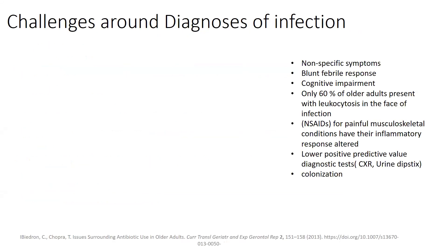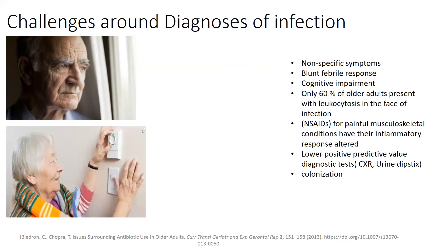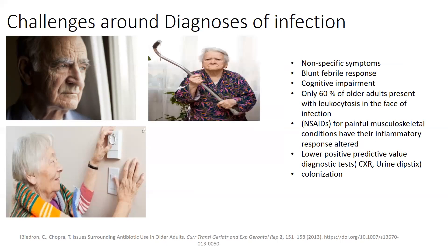There are also challenges around the diagnosis of infection in elderly patients. Older persons present with nonspecific signs and symptoms such as increased confusion, falling, and anorexia, which don't have a high positive predictive value for infection. The term 'older is colder' is very relevant — older and even frail adults have decreased basal body temperature, and only 30% to 50% actually present with a fever even in the setting of serious infection. Studies show only 60% of older patients present with leukocytosis in the face of infection. Many elderly patients are on non-steroidal anti-inflammatory drugs for musculoskeletal conditions, and NSAIDs can impair or alter the inflammatory response.